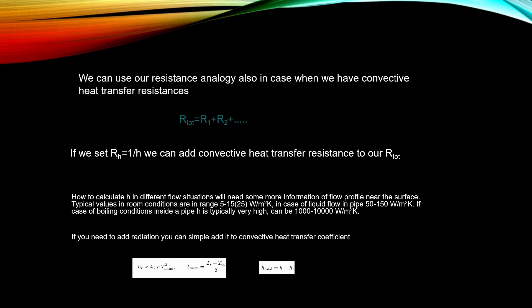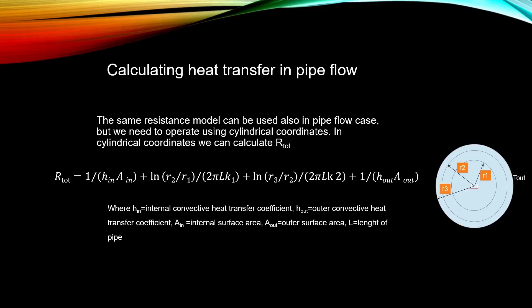In the case of liquid flow in a pipe, H can be up to 150 watts per square meter Kelvin. In some special cases like boiling in a pipe, this H value can be very high — even up to 10,000. If you are working with pipe flow cases, you need to move to cylindrical coordinates. Here is how to calculate the total heat transfer resistance — you will have logarithm terms there. Always use radius when calculating this kind of case, and you can add H values to the calculation of your R value.